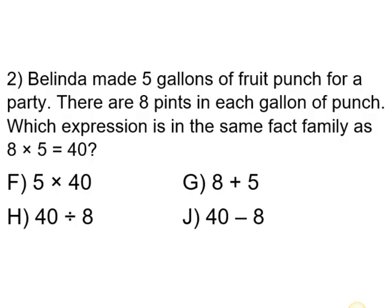Let's move to the next question. Number two: Belinda made five gallons of fruit punch for a party. There are eight pints in each gallon of punch. Which expression is in the same fact family as 8 times 5 equals 40? F: 5 times 40, G: 8 plus 5, H: 40 divided by 8, J: 40 minus 8.